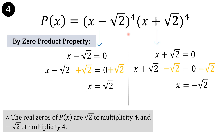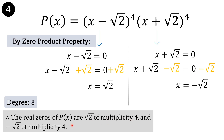Therefore, the real zeros of p of x are: square root of 2 of multiplicity 4, from x minus square root of 2 quantity raised to 4 — square root of 2 appears 4 times; and negative square root of 2 of multiplicity 4. The degree of the function is 8. Counting all the real zeros: 4 plus 4 is 8. Therefore, the zeros of this function are complete.